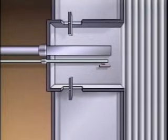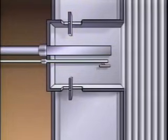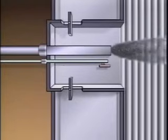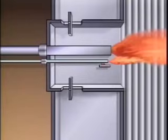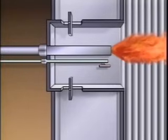A burner has three main parts: a fuel nozzle, an igniter, and one or more air registers. The fuel nozzle helps to create turbulence by spraying fuel into the boiler. The igniter provides the initial heat needed for combustion. After the fuel begins to burn, the heat needed to continue combustion is usually supplied by the flame in the boiler furnace, and the heat from the igniter is no longer needed.